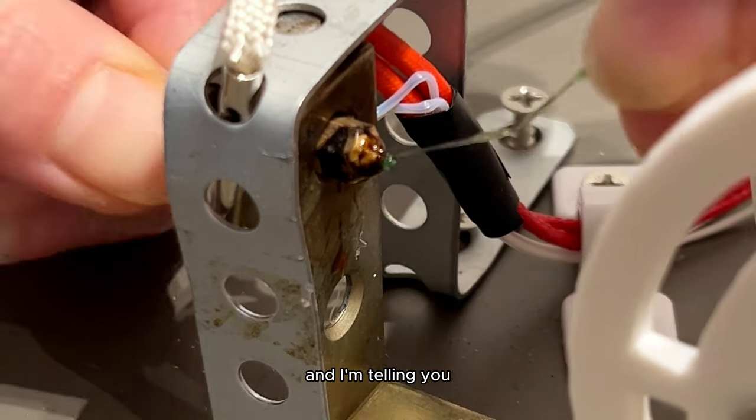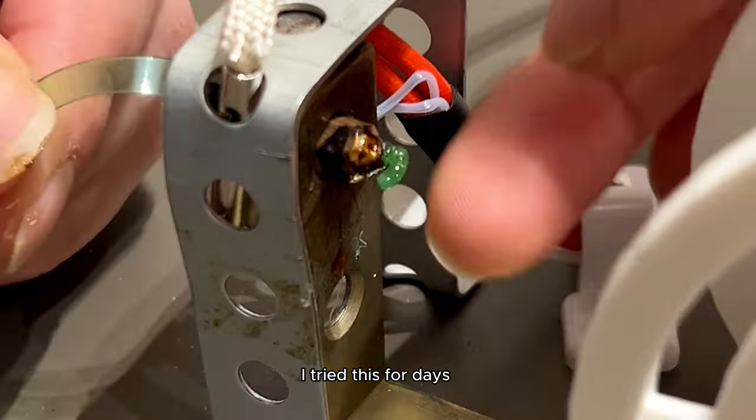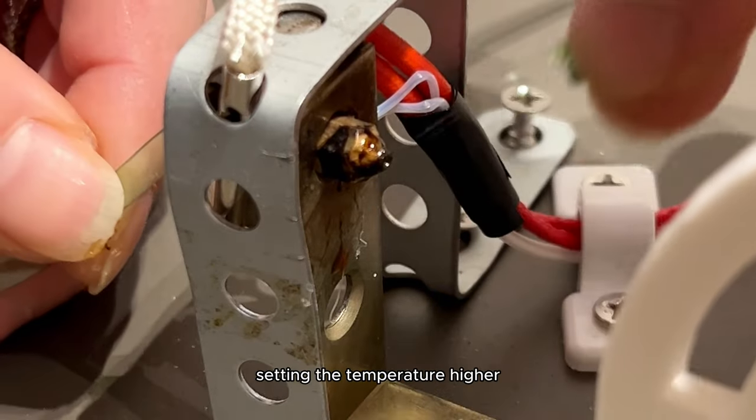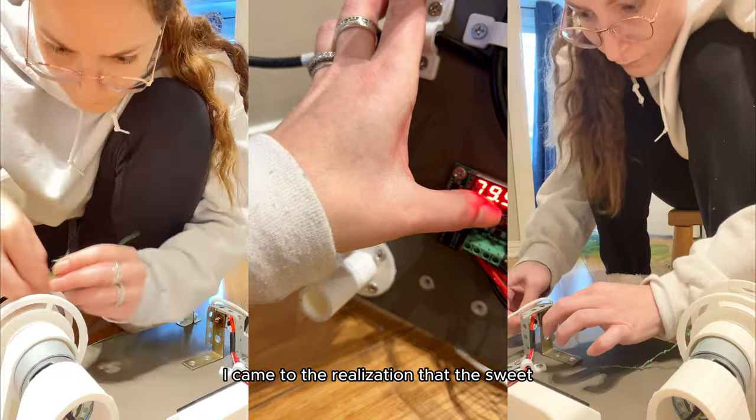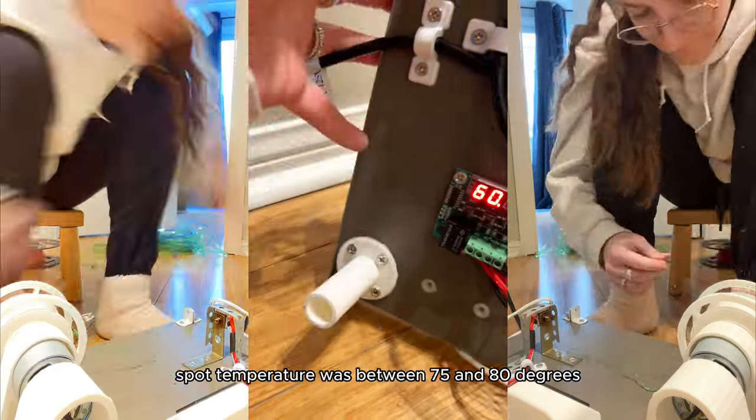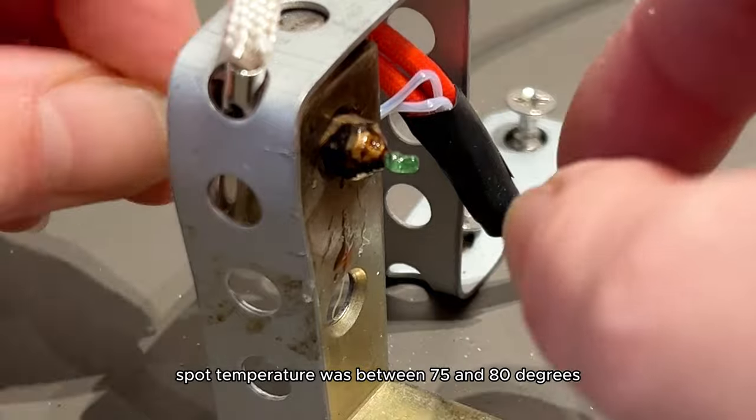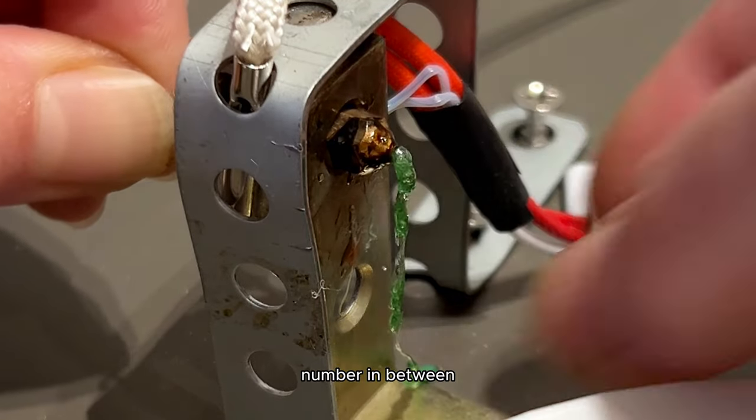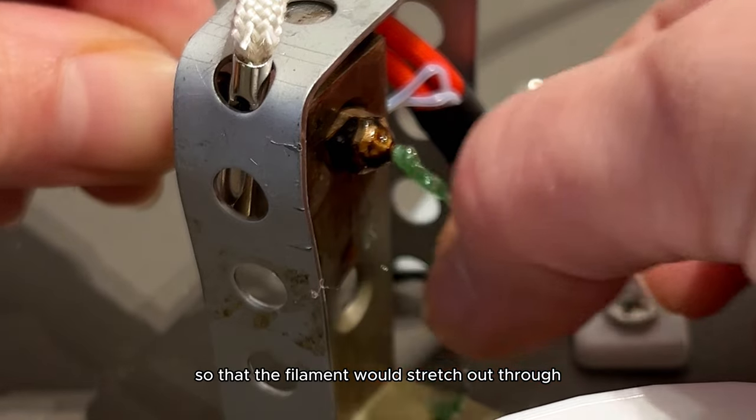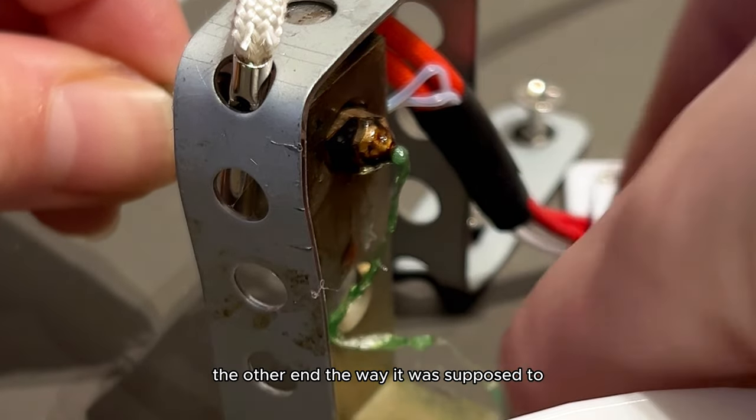You guys gave me the best tip ever which was to lower the temperature. I tried this for days one by one setting the temperature higher lower higher lower and finally I came to the realization that the sweet spot temperature was between 75 and 80 degrees, but I just had to figure out the exact number in between so that the filament would stretch out through the other end the way it was supposed to.